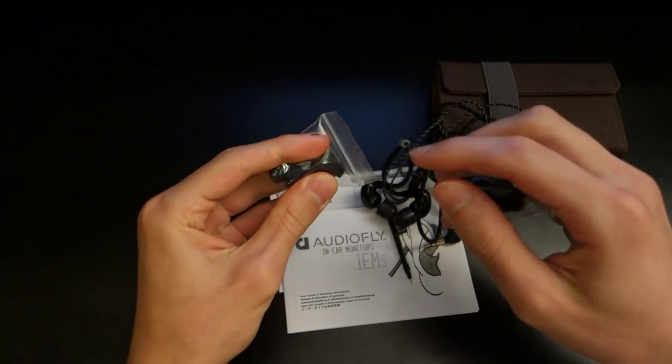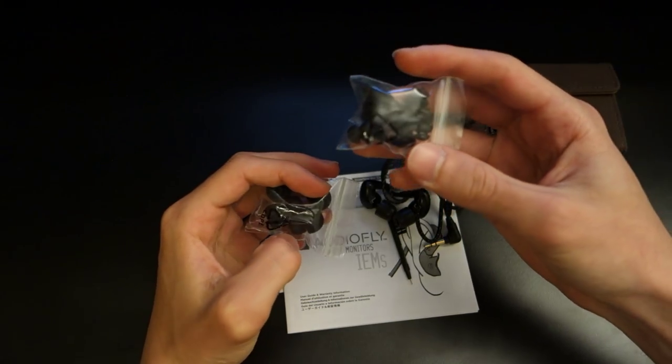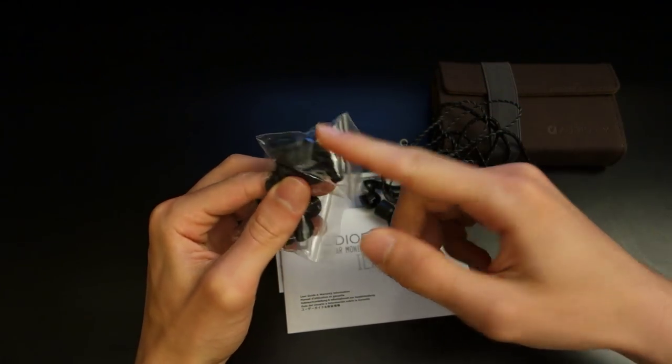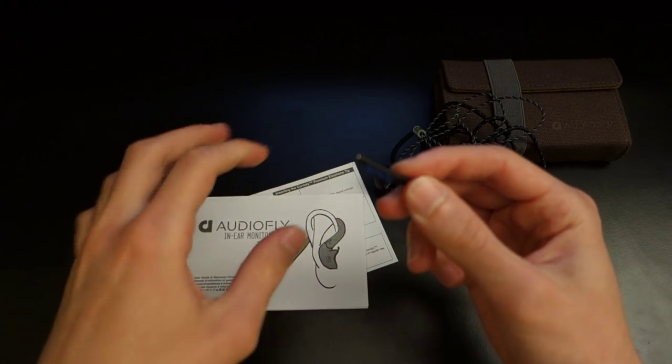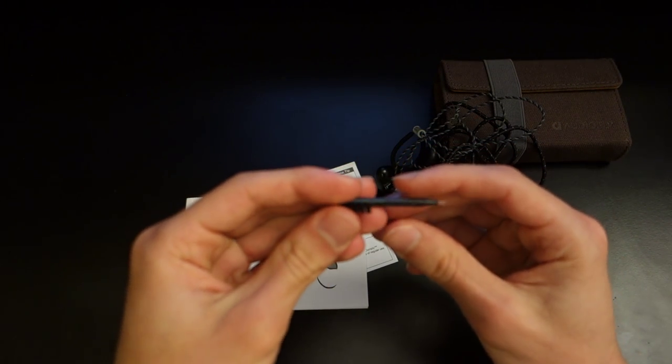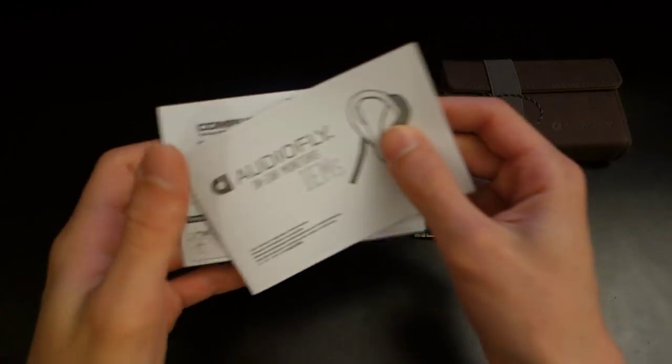These are the T100 foam tips and I really like the fact that these are included. Then you've got small, medium and large silicone tips and you've got small, medium and large dual-flank tips. Silicone black tips. You've got a cleaning tool, which is quite useful, and you've got a manual and LCD Comply instructions.